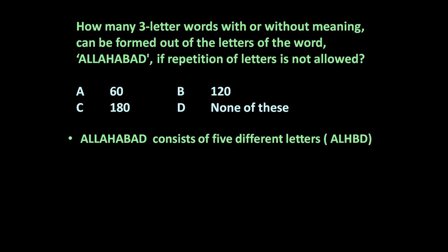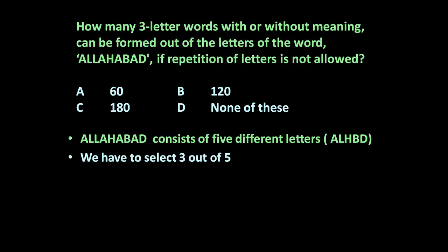To solve this type of problem, note that Allahabad consists of only five different letters: A, L, H, B, D — because A is repeated three times and L is repeated two times. So there are only five different letters, and repetition is not allowed. We need to form three-letter words, which means we have to select three out of five.